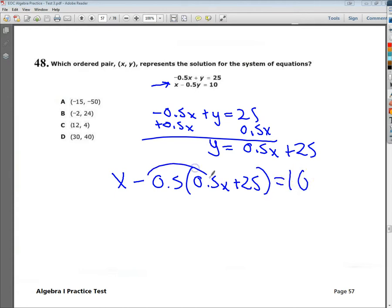Once again, I solve it. So negative 0.25x minus 12.5 equals 10. Here's my x. Now I need to combine my x's together. So I end up getting 0.75x minus 12.5 equals 10. Add 12.5 to both sides.